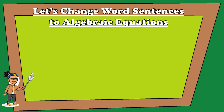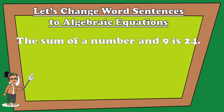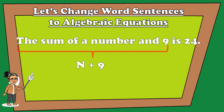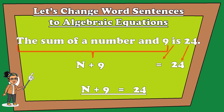Now let's try changing word sentences to algebraic equations. 'The sum of a number and 9 is 24.' The sum of a number and 9 is written as N plus 9. 'Is' becomes the equal sign, and 24 is a constant. So our answer is N plus 9 equals 24.